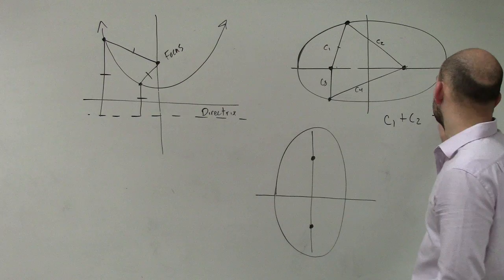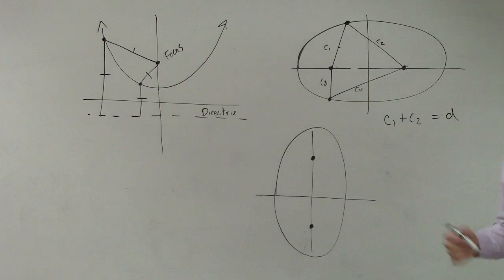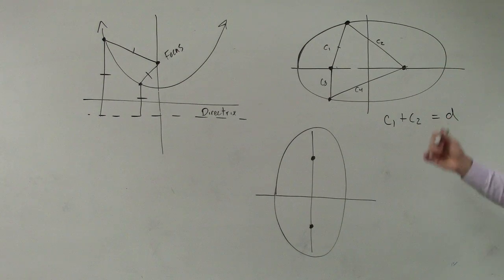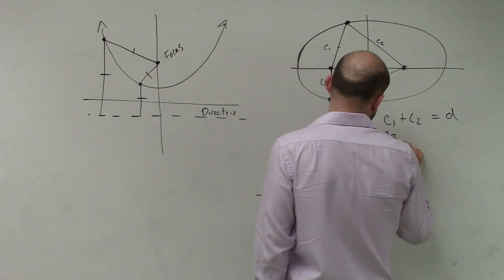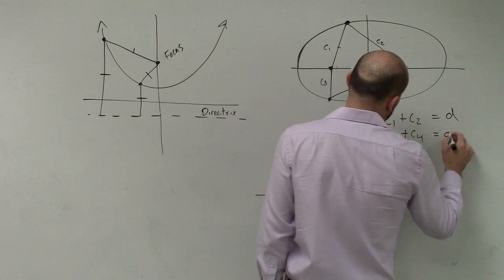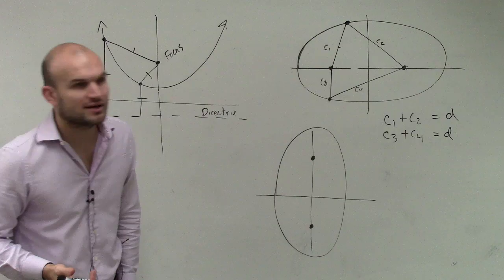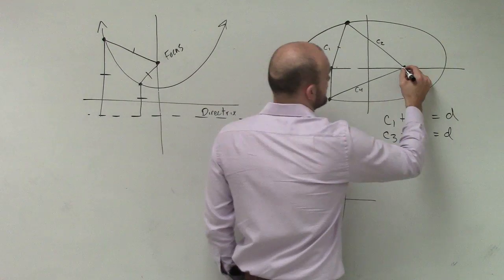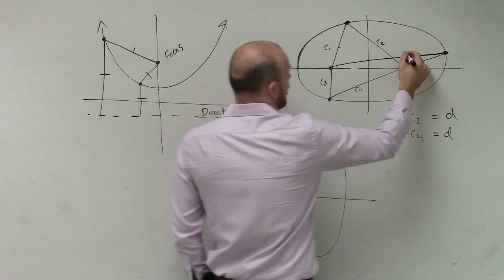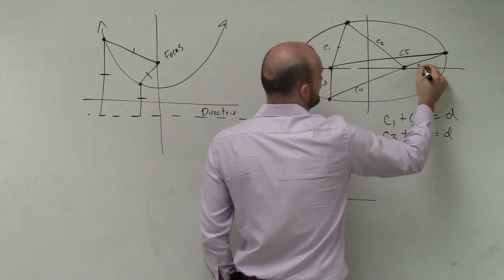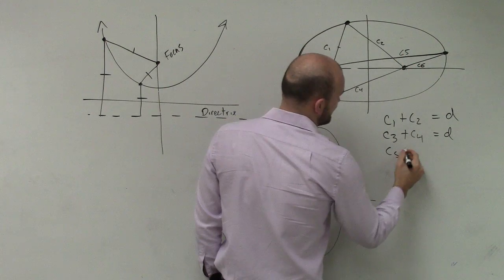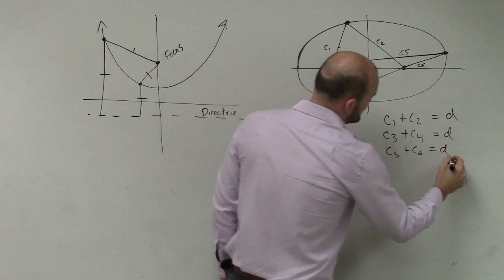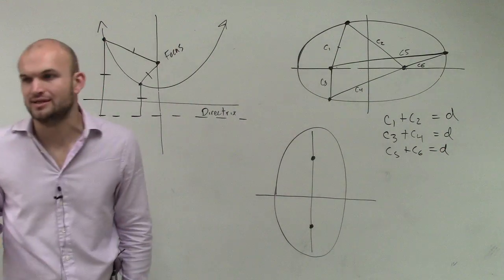Let's say the constant number is 10, I don't know. I'll just call it d, which will be our constant. If c1 plus c2 equals d, then guess what? c3 plus c4 equals d. And it doesn't matter where I pick these points. It's the sum of all points. Let's do c5 and c6. c5 plus c6 equals d. Remember, d is just our constant number.